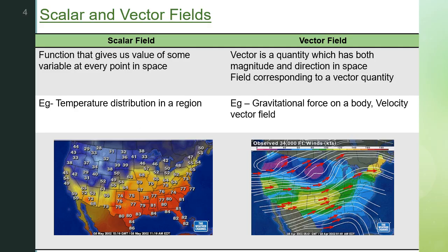What is a scalar field and a vector field? A field is something which is defined over a certain region in space. If a scalar quantity is described in a certain region of space, it is called a scalar field. For example, the temperature distribution in different parts of the world gives us a scalar field, showing temperature in a particular region.